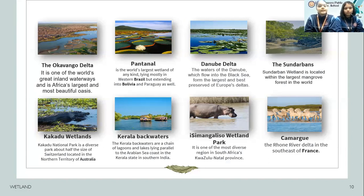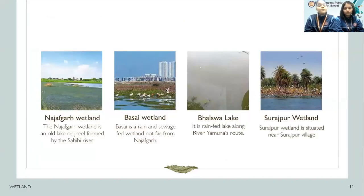Notable wetlands include: the Okavango Delta, the Pantanal, the New Way Delta, the Sundarbans, Kakadu Wetlands, Kerala Backwaters, and Ishimangal wetland. Focusing on Delhi NCR, there are some notable wetlands including Najafgarh Wetland, Vasai Wetland, Valsawa Lake, and Surajpur Wetland.